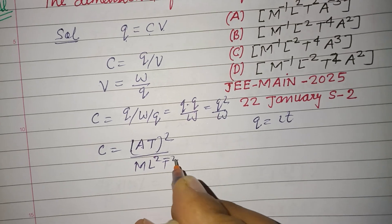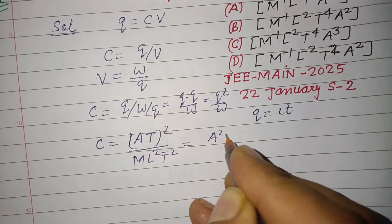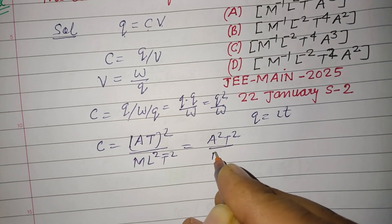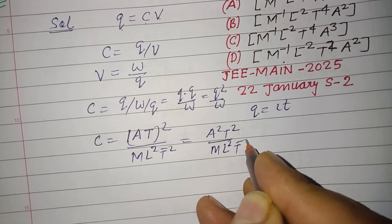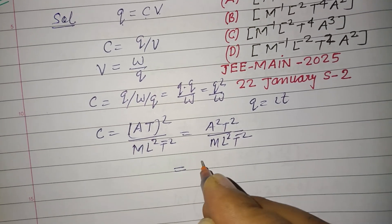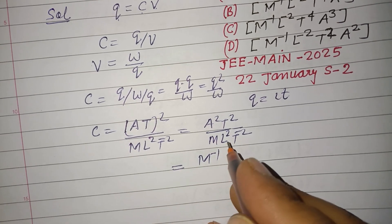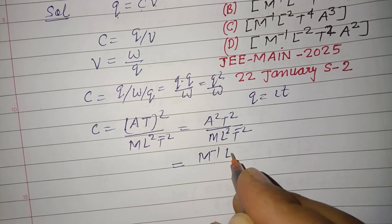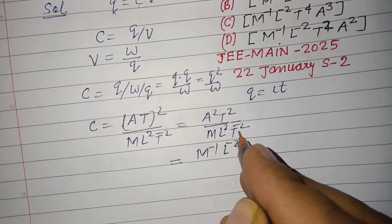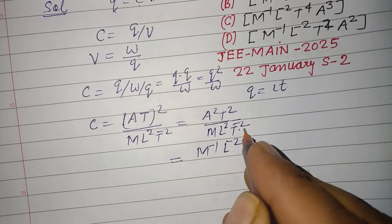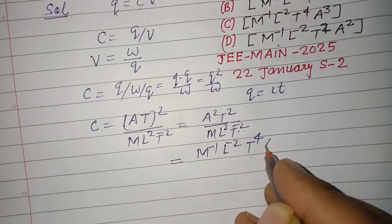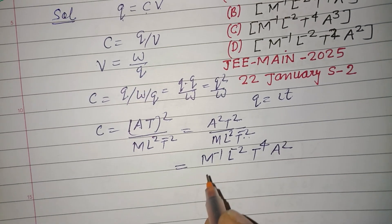So this is A squared T squared over M L squared T minus 2. And this becomes M to the power minus 1, and L to the power minus 2, T to the power 2 plus 2 equals 4, A to the power 2.